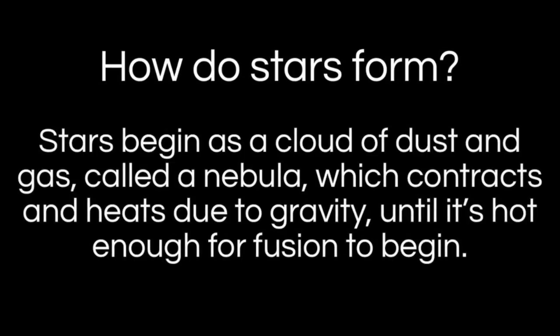So how do stars actually form? It involves gravity. We begin with a cloud of dust and gas, which we call a nebula. The nebula will contract, causing it to heat up — this is caused by gravity, as it essentially collapses upon itself. And when it reaches the right temperature, fusion will begin. And once we have fusion, we have a star.